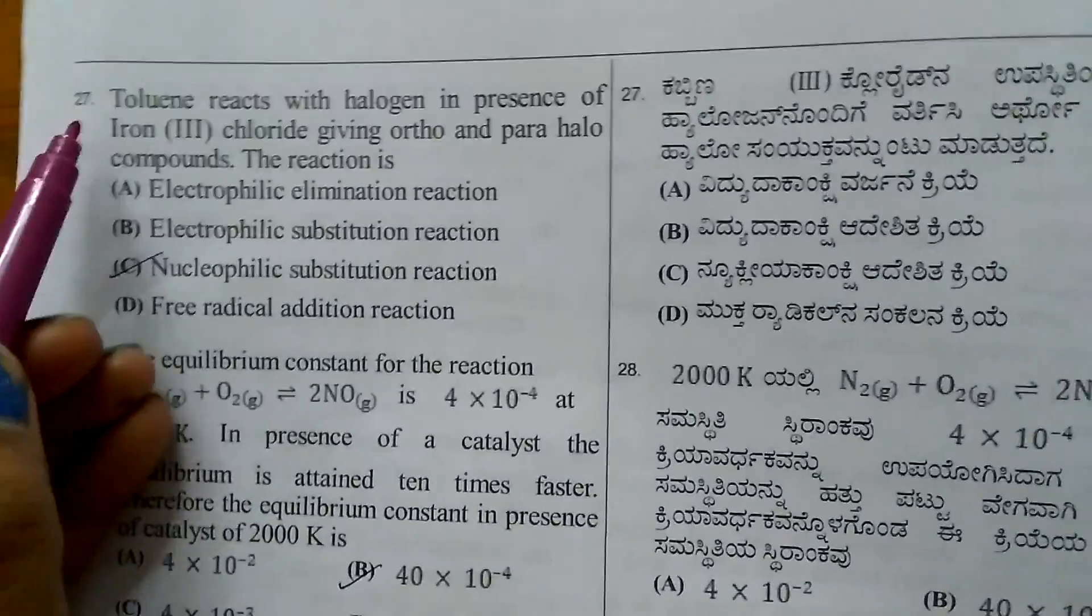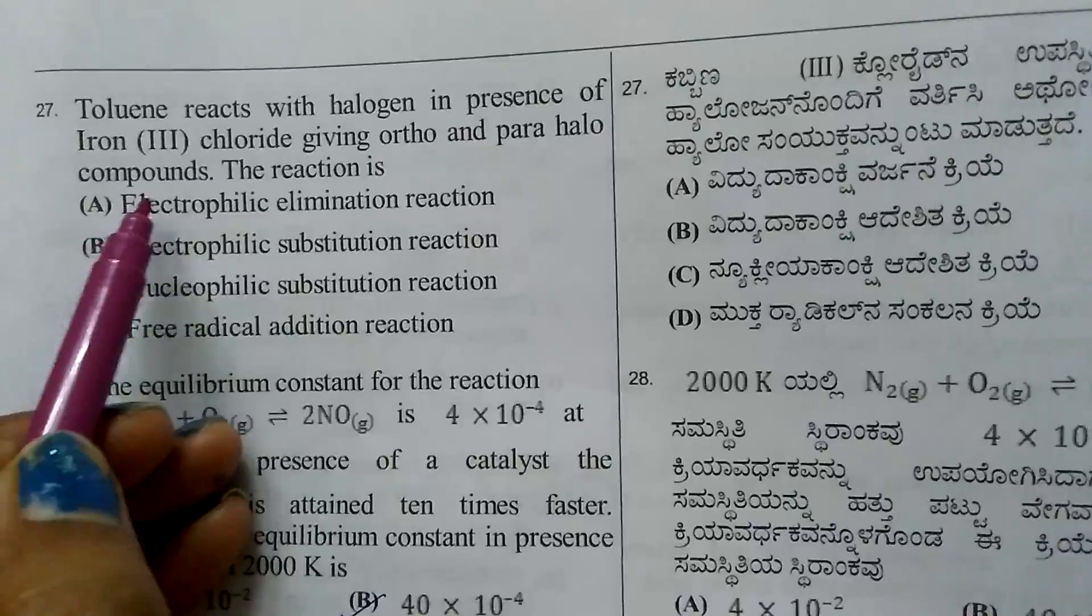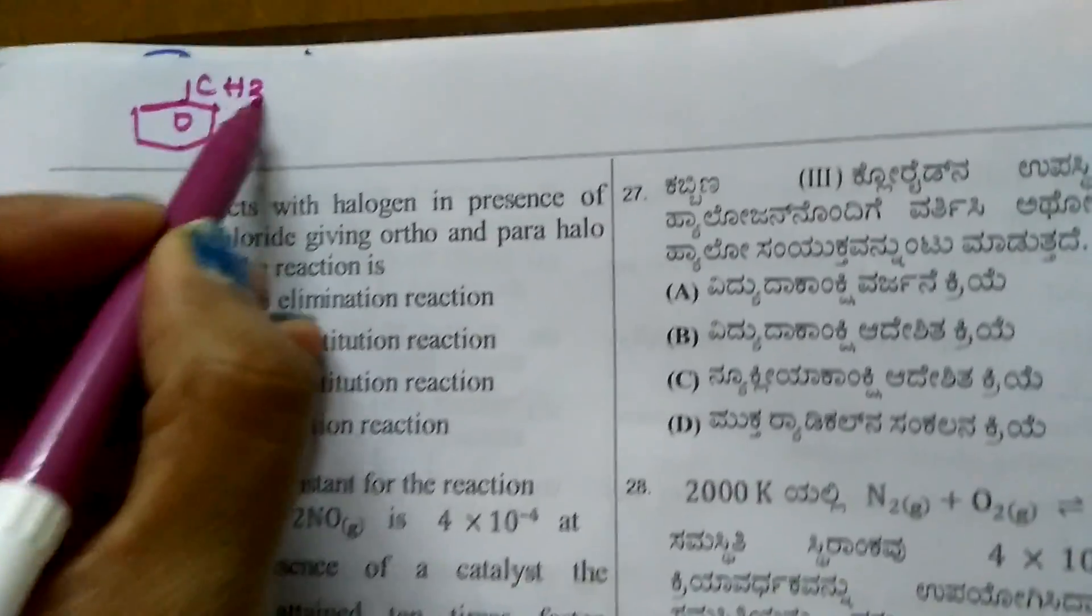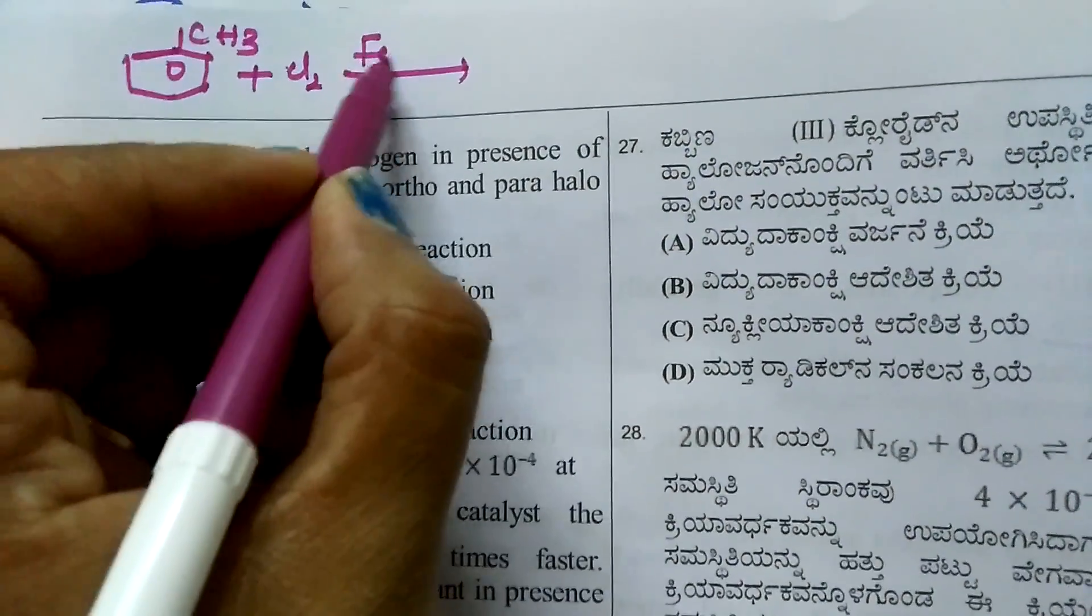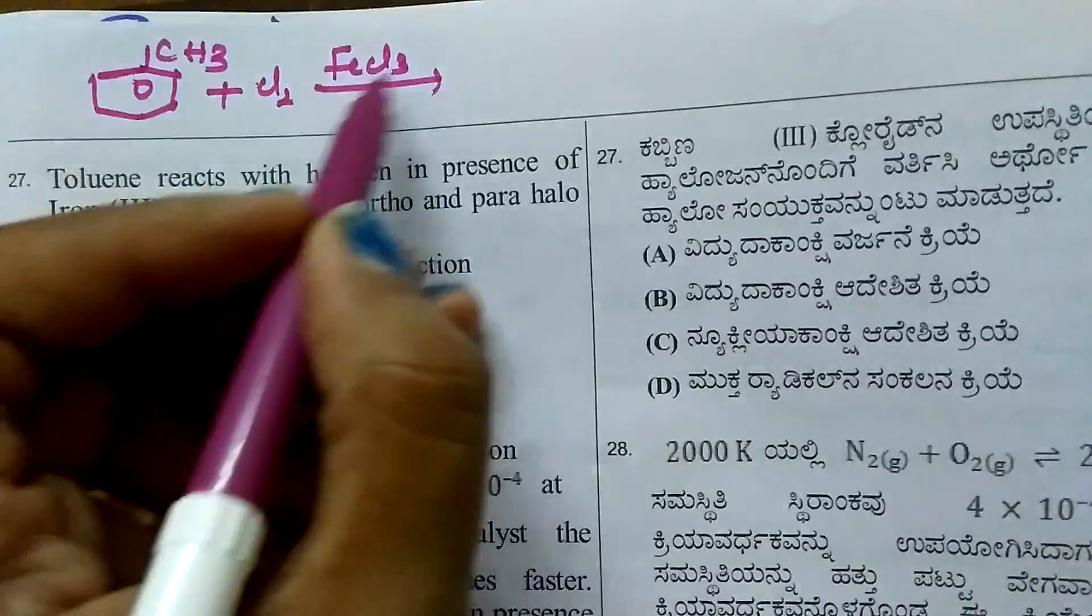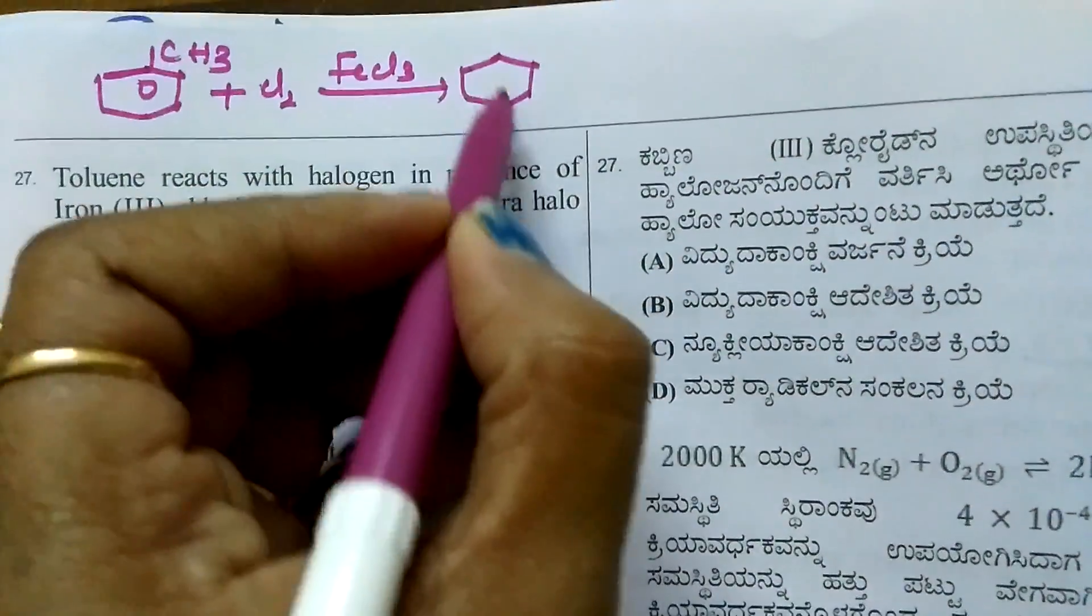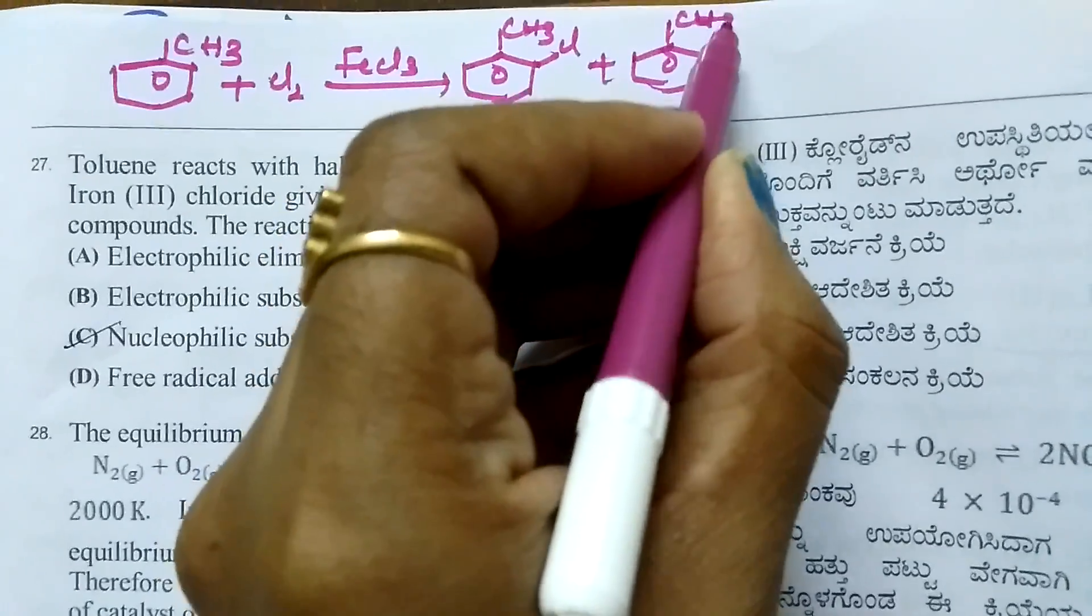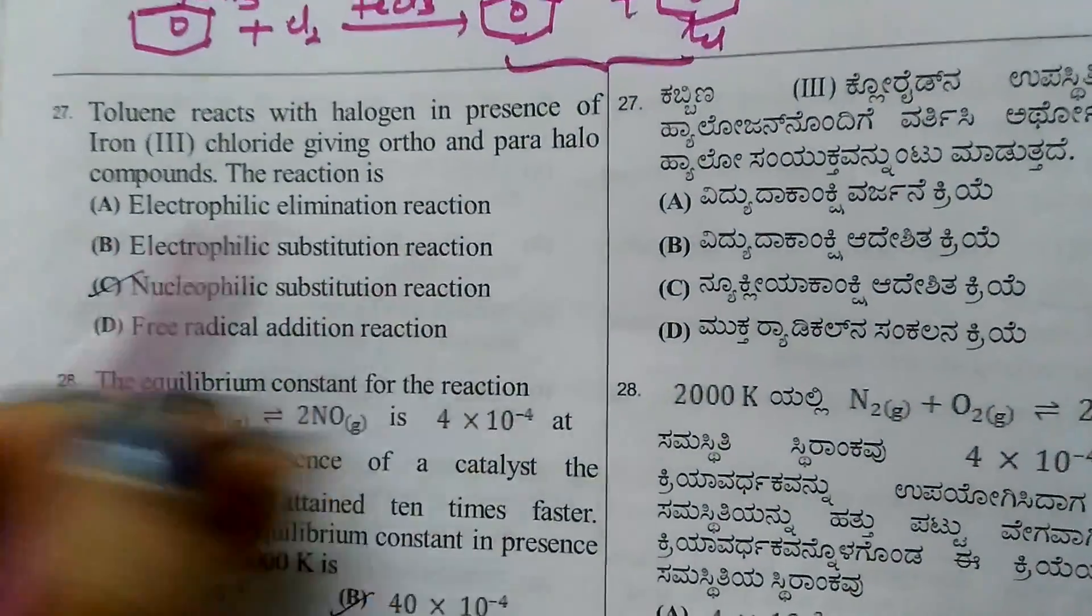Coming to question number 27. When toluene reacts with halogen in the presence of iron(III) chloride giving ortho and para halogen compounds, this is toluene. When toluene reacts with Cl2 in the presence of FeCl3, this acts as a Lewis acid. Chlorine is converted to FeCl4- and Cl+ attacks both ortho and para positions. We get products with chlorine at ortho and para positions. Cl+ is attacking, so it is called Electrophilic Substitution Reaction.